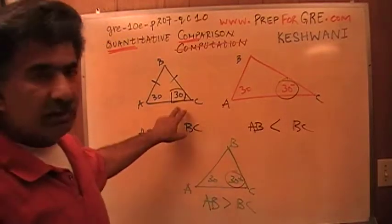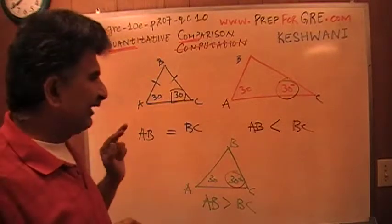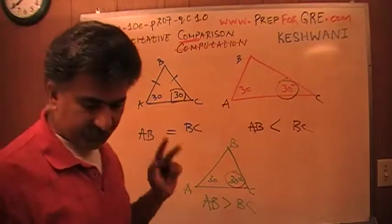It depends. Because we do not know how much angle C is, we cannot make any call as to which side is bigger, AB or BC. We cannot make that call.